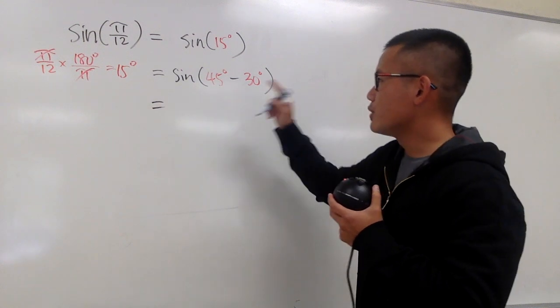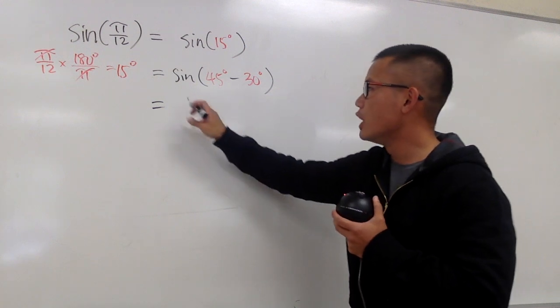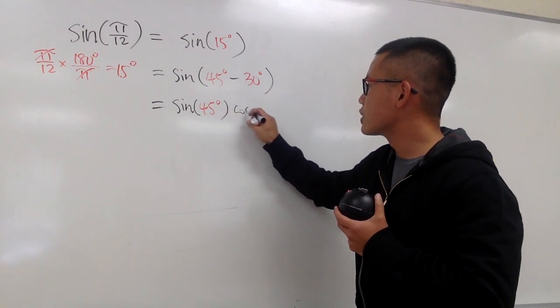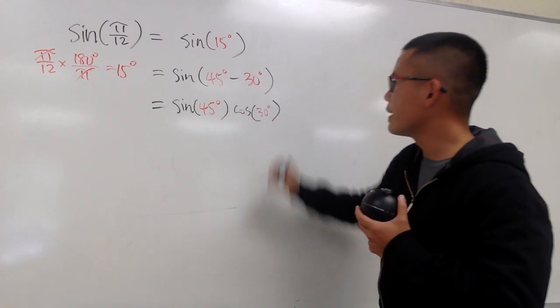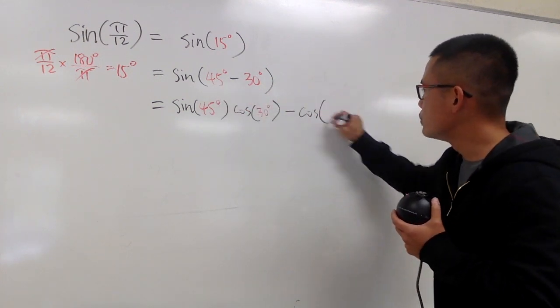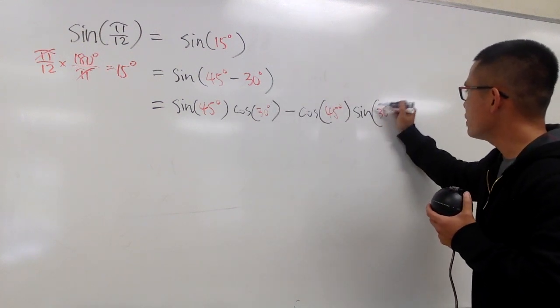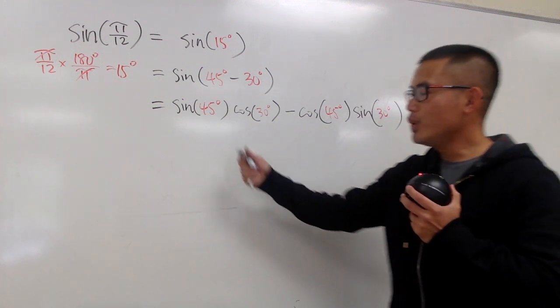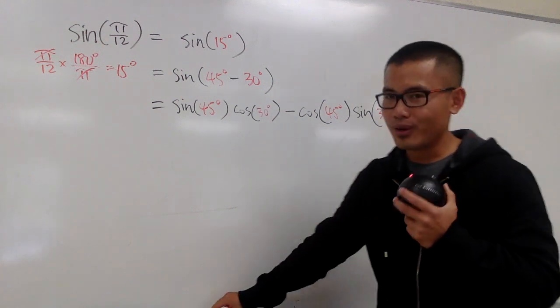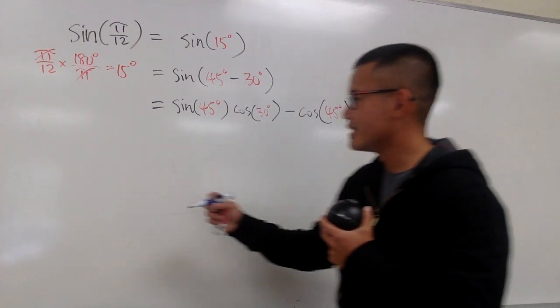Now we are going to be utilizing the difference formula for the sine, which says we will have sine of the first angle, which is the 45 degrees, times cosine of the second, which is the 30 degrees. And then we will have to minus cosine of the first, which is the 45, times sine of the second, which is the 30 degrees. And now we will be able to figure this out individually.